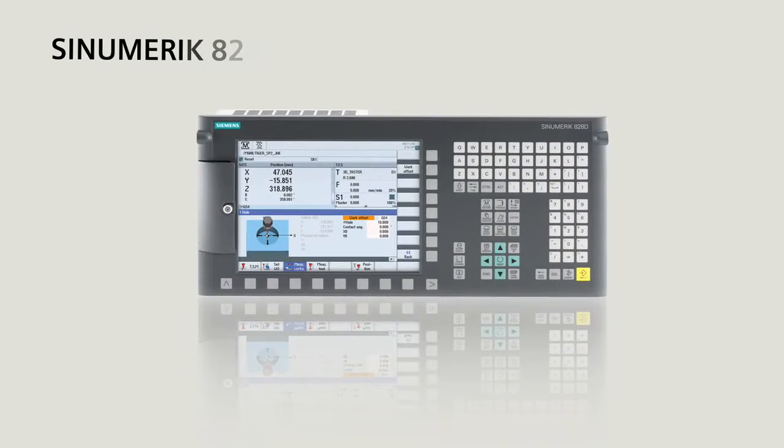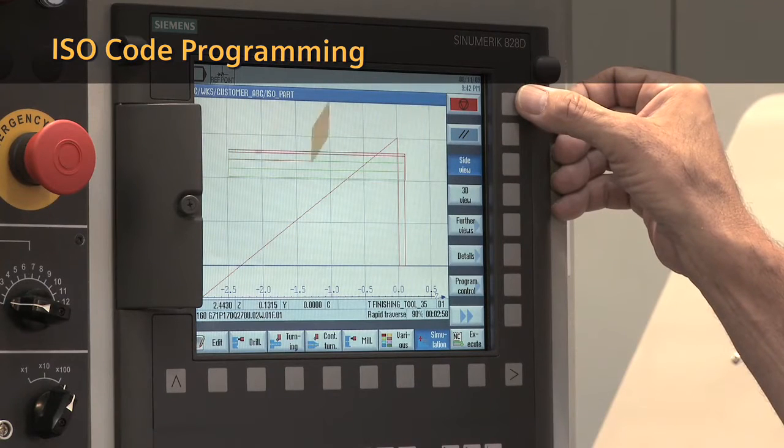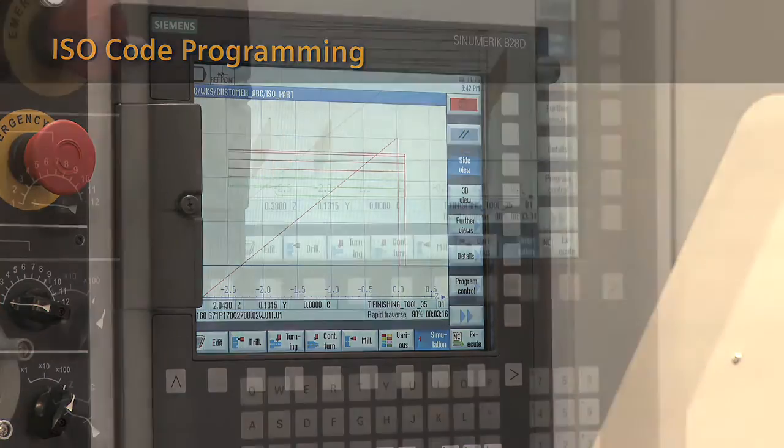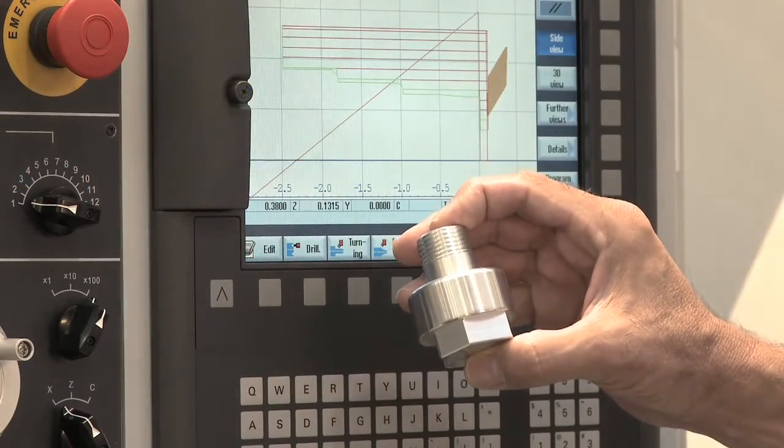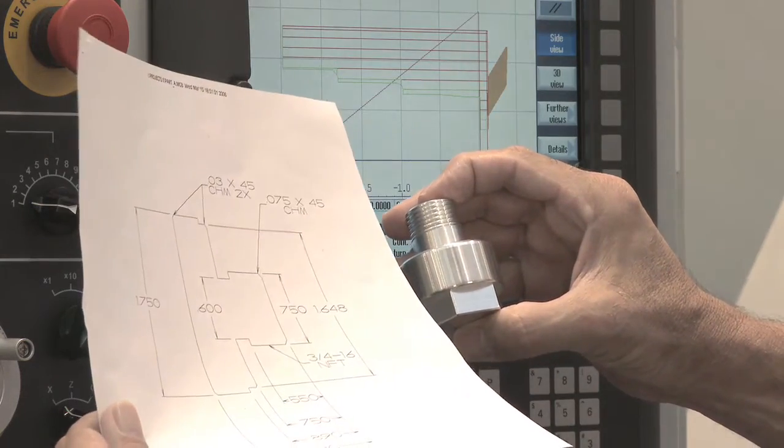Give your job shop a new business advantage with the Sinumerik 828D CNC. Achieve easier and faster part production without skipping a beat on operator acclimation. You can easily run existing jobs including programs from older G-code based controls.